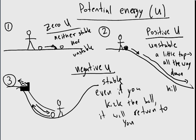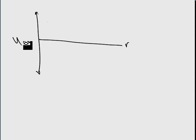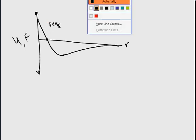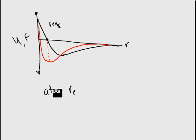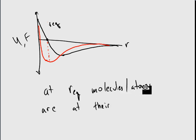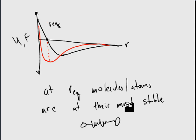This is how we think about potential energy on that last graph we had. It looks something like this — R on one axis, potential energy here, and force here. The force looks something like this and hits zero at the equilibrium distance. The potential energy curve looks something like this, and at the equilibrium distance it's at its lowest potential energy. What this is saying is that at the equilibrium distance, molecules or atoms are at their most stable. They resist change — just like the ball in the well example.